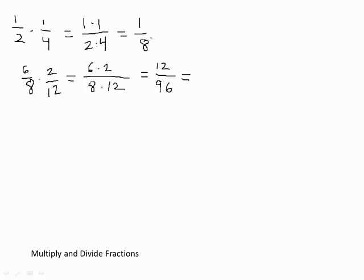This one's already reduced as far as it can go. So you might want to come down and do one of those long little things we did for finding prime factors. I'm going to try and do it in my head here. Because it's an even number: 2 divided by 12 is 6, and 6 still has a 2 and a 3 in it. We learned that Excel trick for finding out all the prime factors — that was pretty cool.